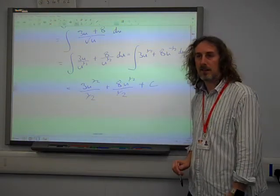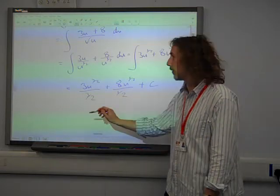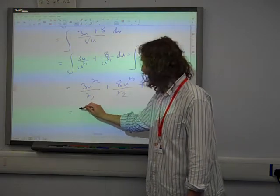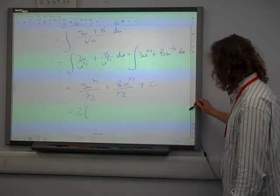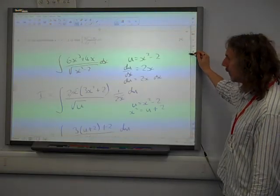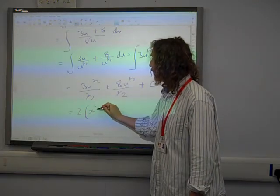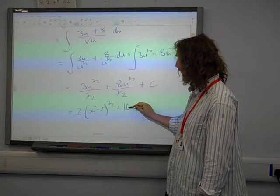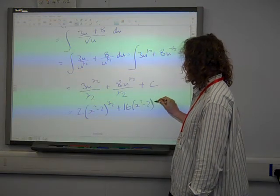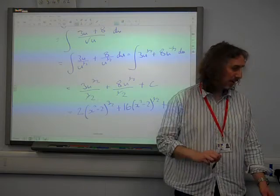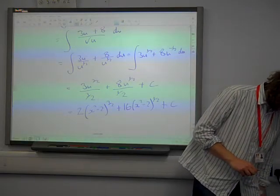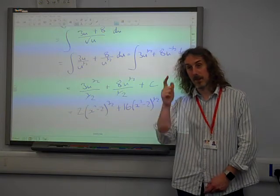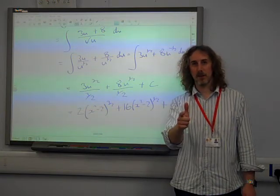And now let's tidy it up and get rid of the substitution. That gives us 2 times u, which is x squared minus 2, to the 3 over 2, plus 16 times x squared minus 2 to the half, plus c, and that was the final answer, and that's indulging maths.